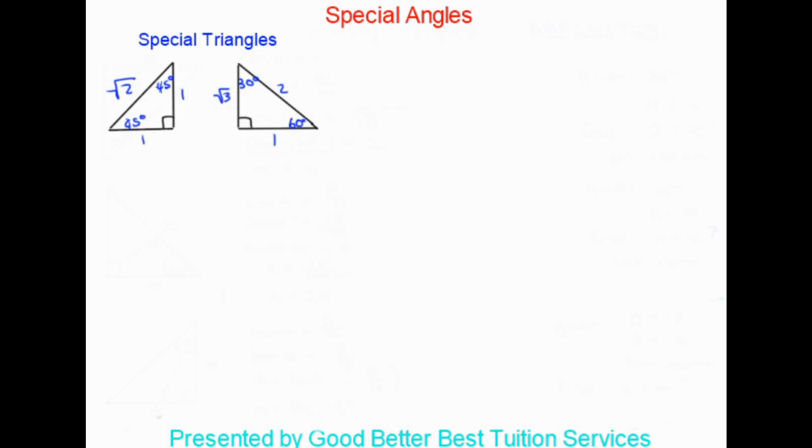Take a minute to look at and memorize these triangles — we'll be using them throughout the examples. So let's say they ask us to find tan 45 degrees without the use of a calculator. We're dealing with three types of angles: 30, 45, and 60 degrees, so the 45 degrees tells us we're going to use the triangle on the left-hand side.